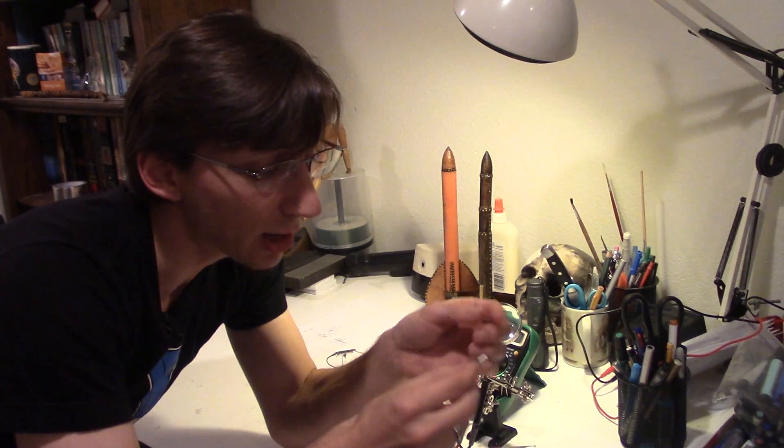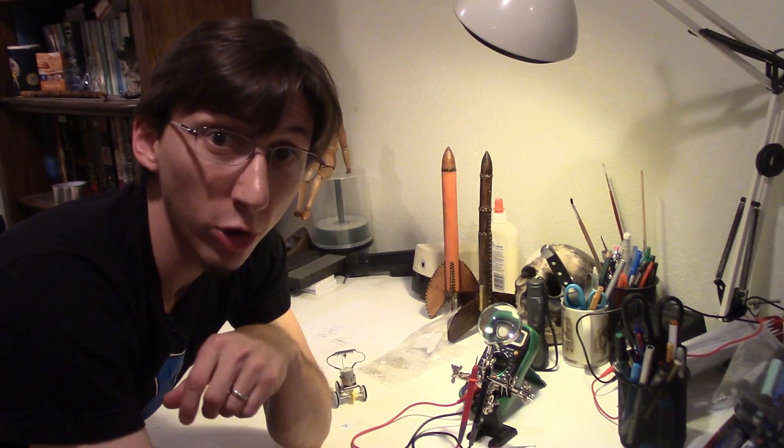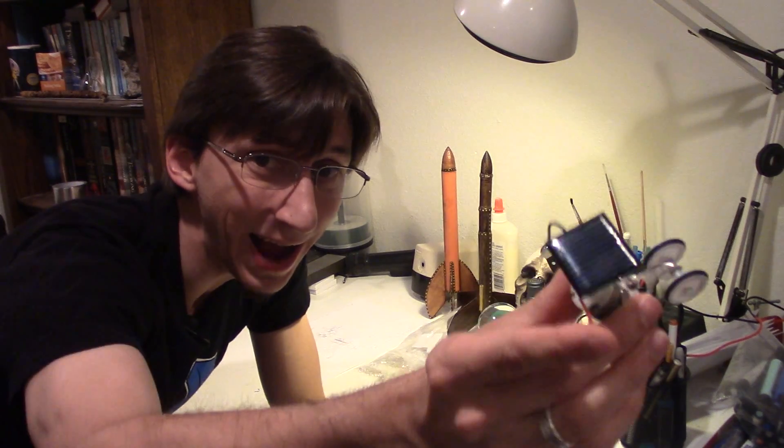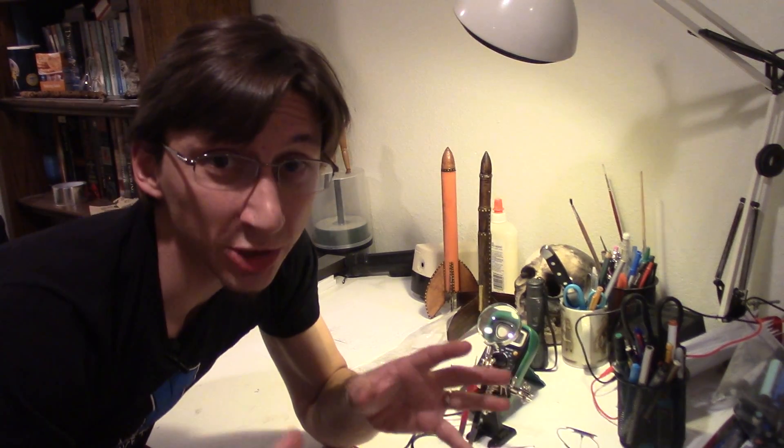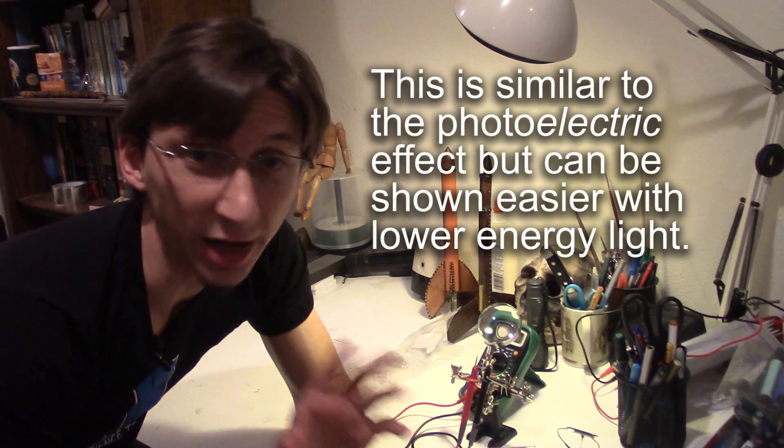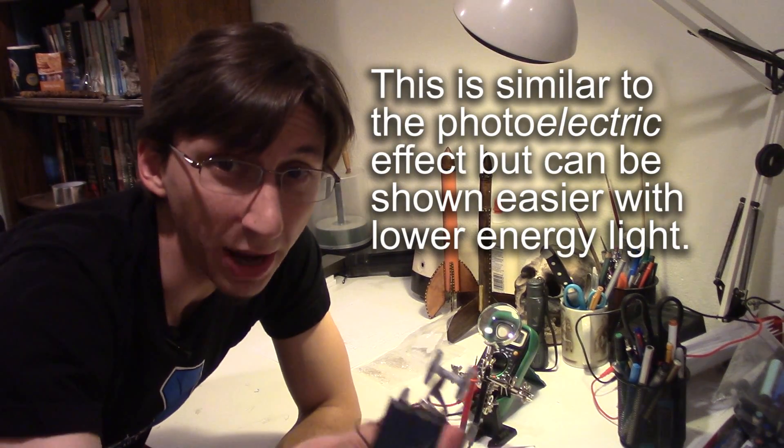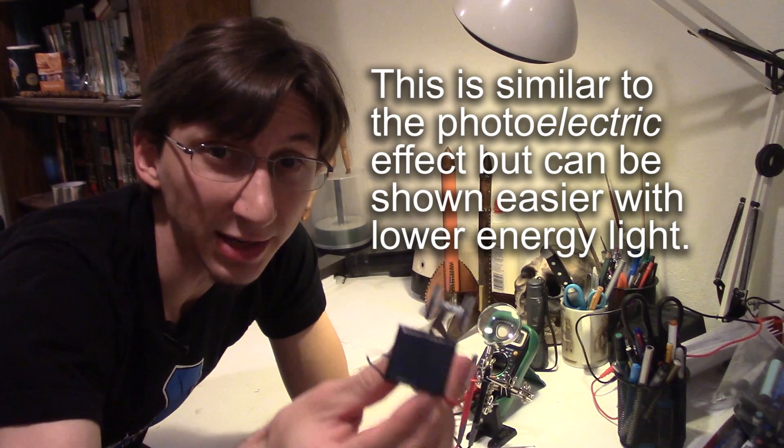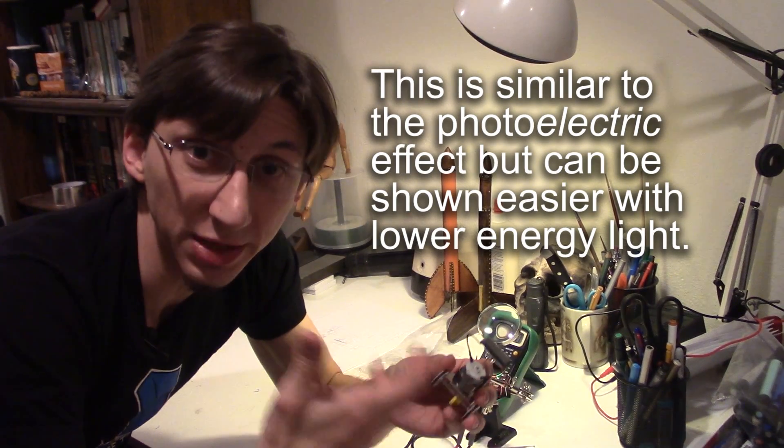But a neat thing about how LEDs are made is that you can actually shine light on them and have them work in reverse like a tiny solar panel. And what I demonstrated here with my voltmeter is called the photovoltaic effect. You might have heard before solar panels being called photovoltaic cells and that's because they operate on the same principle.